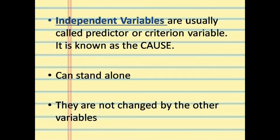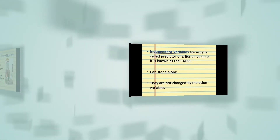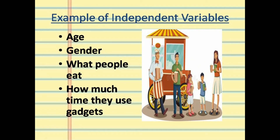Independent variables are usually called predictor or criterion variables. They are known as the cause — they can stand alone and are not changed by other variables. Examples of independent variables include age, gender, what people eat, and how much time they use gadgets. These can affect the variables that we will discuss next.